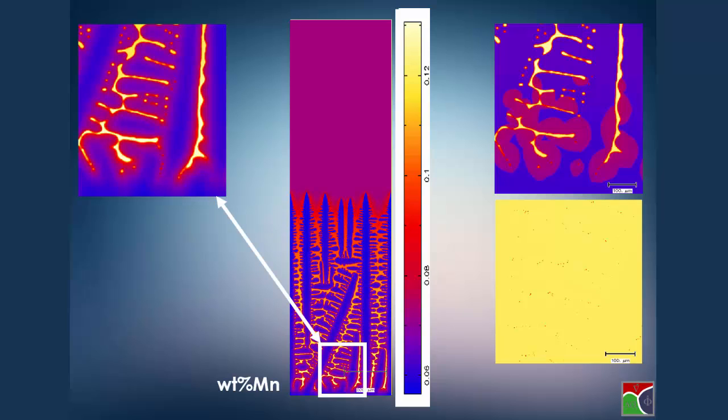However, if we look at the diffusion of manganese, we see a large difference because manganese does not diffuse as fast. There is only a small penetration of manganese into the solid when most of the manganese is segregated into the interdendritic regions.